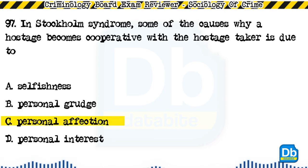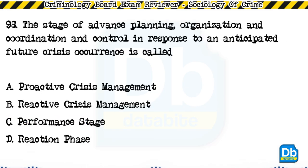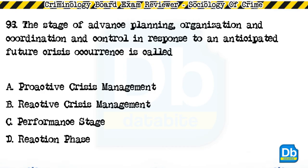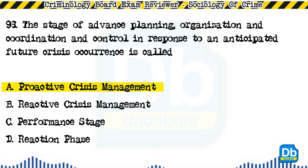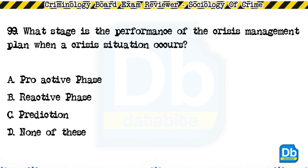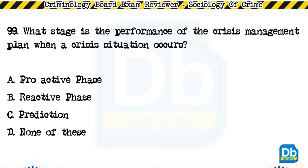Question 98: The stage of advanced planning, organization, coordination, and control in response to an anticipated future crisis occurrence is called: a) proactive crisis management, b) reactive crisis management, c) performance stage, d) reaction phase. The answer is A, proactive crisis management. Question 99: What stage is the performance of the crisis management plan when a crisis situation occurs? a) proactive phase, b) reactive phase, c) prediction, d) none of these. The answer is B, reactive phase.